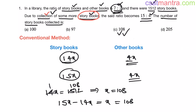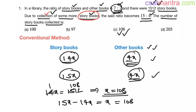Very easy problem. Make sure the problem fits into the given condition — that is, the number of other books remains unchanged. We did this first. After that, we found out the value, because the initial number of storybooks is given. From that we can find the value of x, and from there the number of storybooks collected is final minus initial. So x = 108.